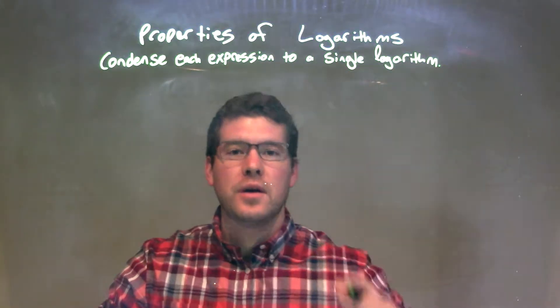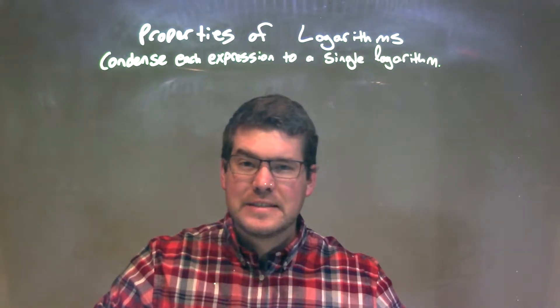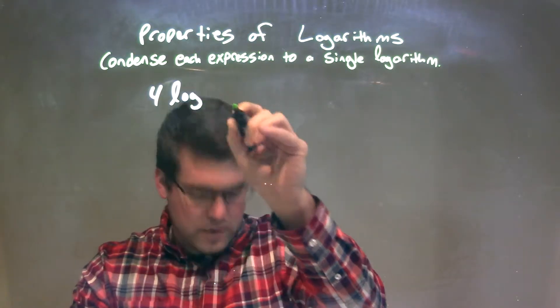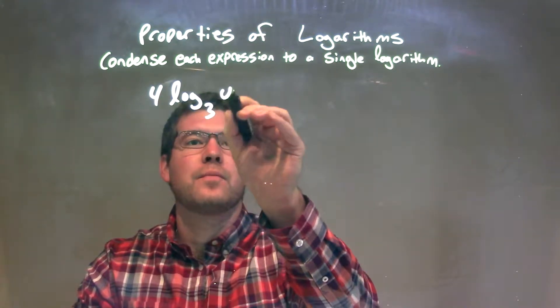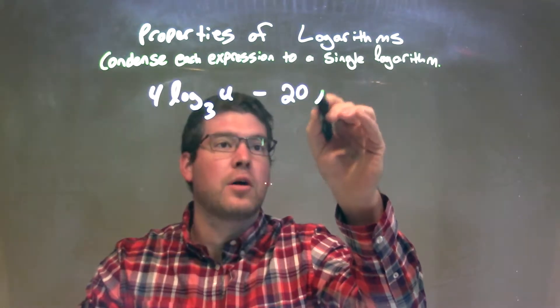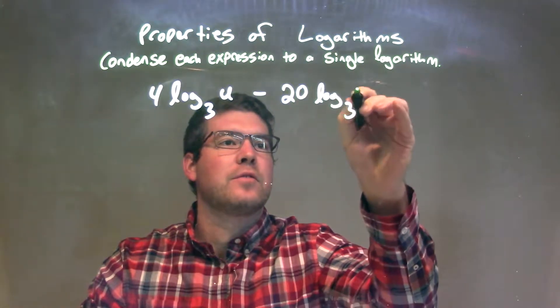I'm going to condense each expression to a single logarithm. So, if I was given this: 4 log base 3 of u minus 20 log base 3 of v.